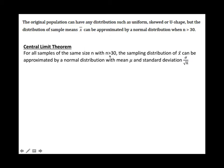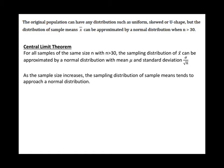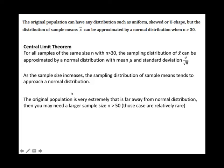When the sample size is greater than 30, the mean doesn't change, and the standard deviation becomes the standard deviation divided by the square root of the sample size n. The Central Limit Theorem says that as the sample size increases, the sampling distribution of the sample means tends to approach a normal distribution. If the original population is very extremely far from normal distribution, you may need a larger sample size — n greater than 50. But normally, n greater than 30 is good enough to apply the Central Limit Theorem.